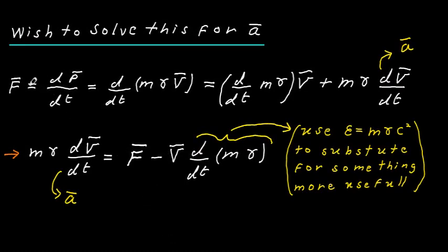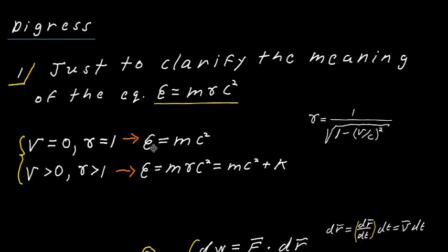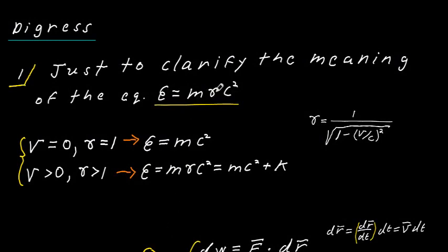Now I'd like to solve for a. We have F equals dp/dt with p equal to the relativistic momentum m·gamma·v. Expanding with the product rule gives: d/dt of m·gamma times v, plus m·gamma times dv/dt. Since dv/dt is the acceleration, I move that term to get m·gamma times dv/dt equals F minus v times d/dt of m·gamma. I'll now use the relativistic energy equation to substitute for d/dt of m·gamma with something more useful.